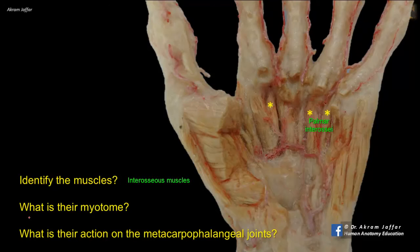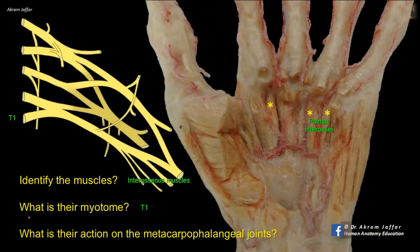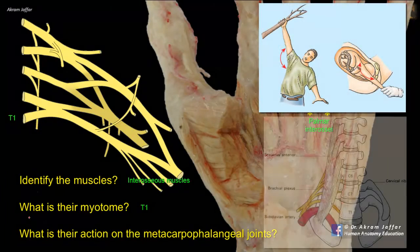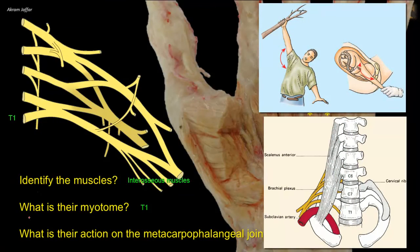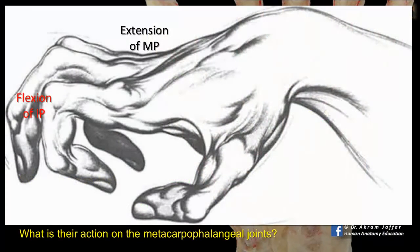All the interossei are supplied by the deep branch of the ulnar nerve. However, in terms of segmental innervation, a myotome is the bulk of muscles supplied by a single spinal nerve. The myotome of the small muscles of the hand is T1, which forms the lowermost root of the brachial plexus. That is why nerve injuries involving T1, such as in Klumpke's palsy or a cervical rib causing kinking of the lower trunk of the brachial plexus in the neck, results in claw hand deformity because of loss of function of the interossei.